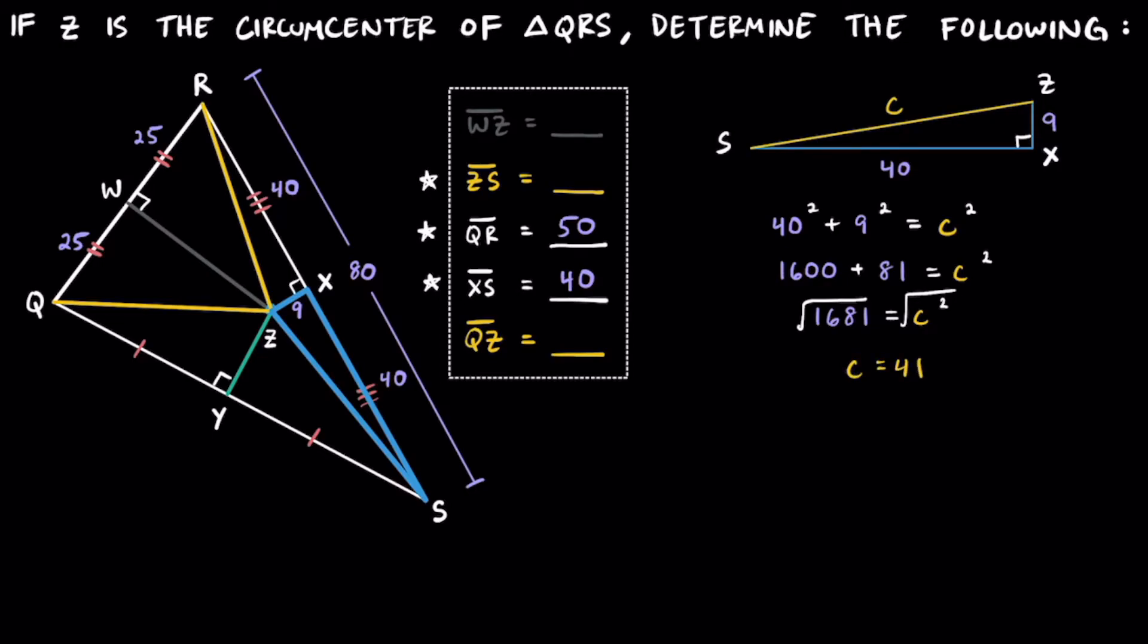And if C is equal to 41, that means segment ZS is also equal to 41. Now, good news for us, this was actually a bit of a two-for-one deal, because segment QZ, remember, is also equidistant from the circumcenter. So if QZ is going to be the same as ZS, we can also say that this is also 41. And while we didn't have to find it, segment RZ would also be 41.